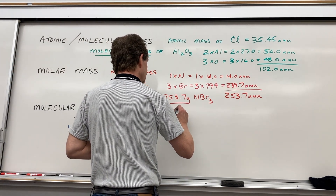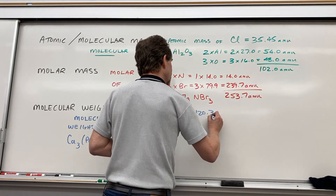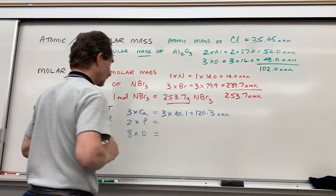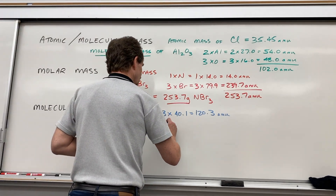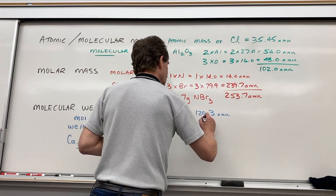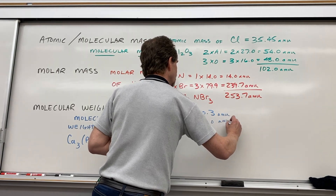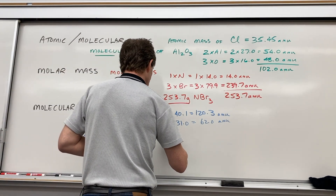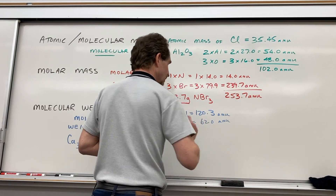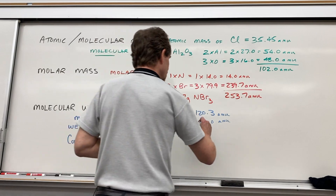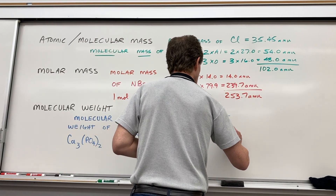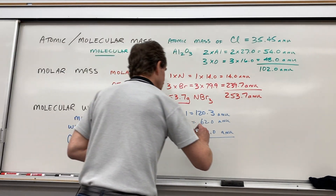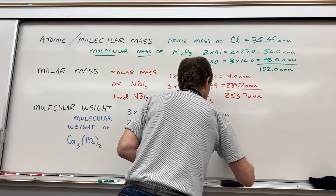Calcium has an atomic mass of 40.1, so three of them becomes 120.3 atomic mass units. My phosphorus — I have two of them, each at 31, so that gives a contribution of 62.0 atomic mass units to the overall molecular weight. My eight oxygens: eight times 16 gives me 128.0 atomic mass units. Add all of those up and you get 310.3 atomic mass units.